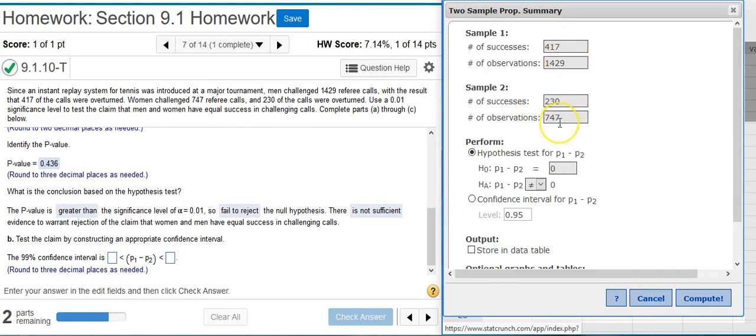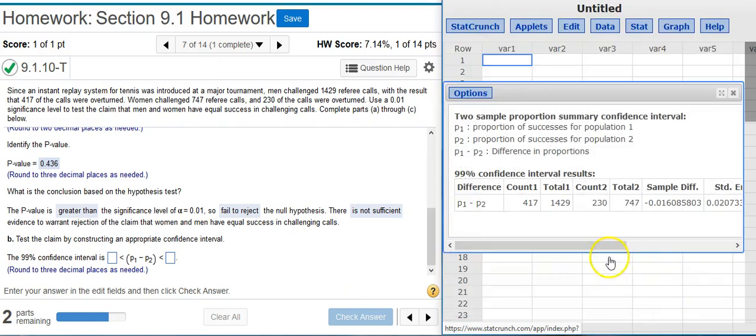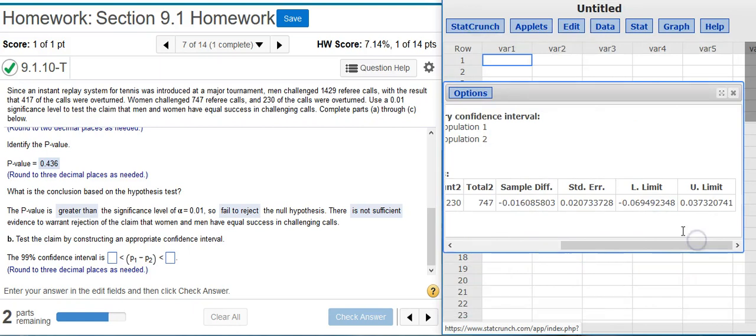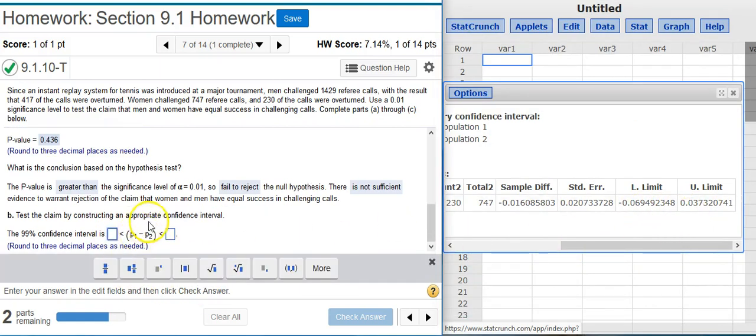So I'm going to put all of these values that I put in earlier. All I have to do is come down here, select the radio button for confidence interval, make sure my confidence level matches, and I press Compute. Out comes my results window. If I scroll over here to the right, I can see my upper and lower limits for my confidence interval, so I'm going to put those here in my answer field.